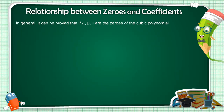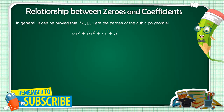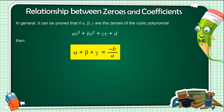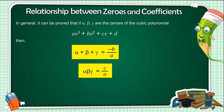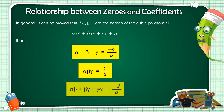In general, it can be proved that if alpha, beta, and gamma are the zeros of the cubic polynomial ax³ plus bx² plus cx plus d, then alpha plus beta plus gamma equals minus b by a; the product alpha·beta·gamma equals minus d by a; and alpha·beta plus beta·gamma plus gamma·alpha equals c by a.